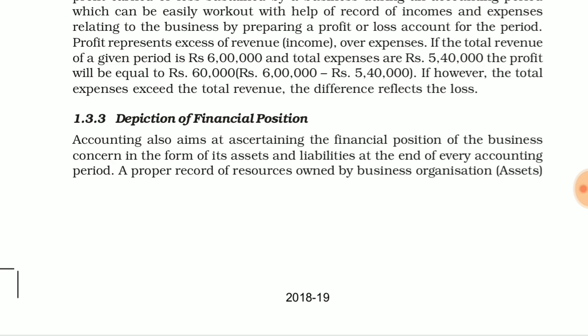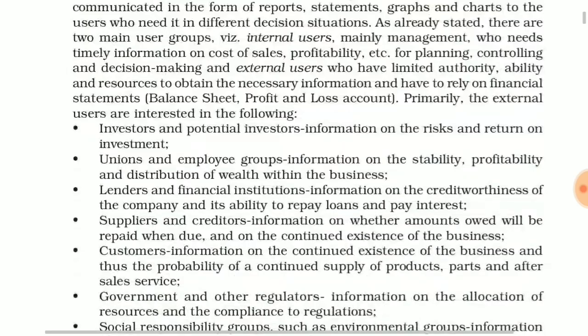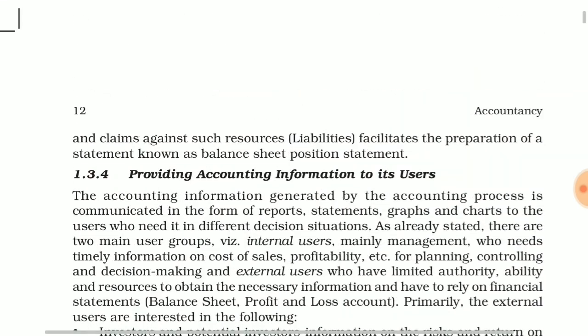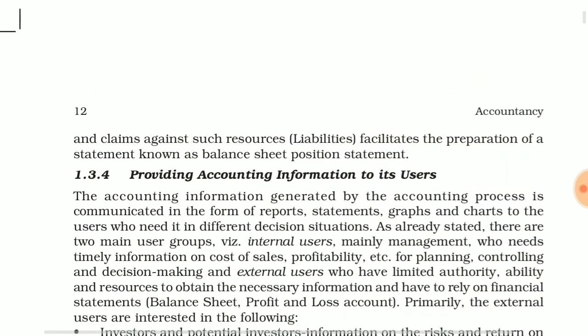That means your company is slowly earning profit every year. This will happen when you are doing accounting and preparing the balance sheet. A proper record of resources owned by the business organization — that is, assets — and claims against such resources — that is, liabilities — for the preparation of a statement called balance sheet or position statement.